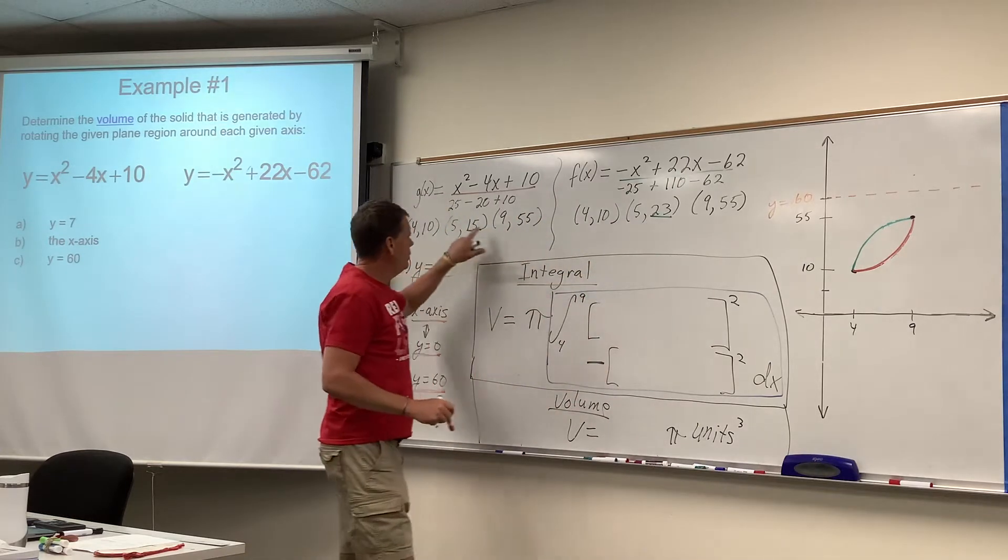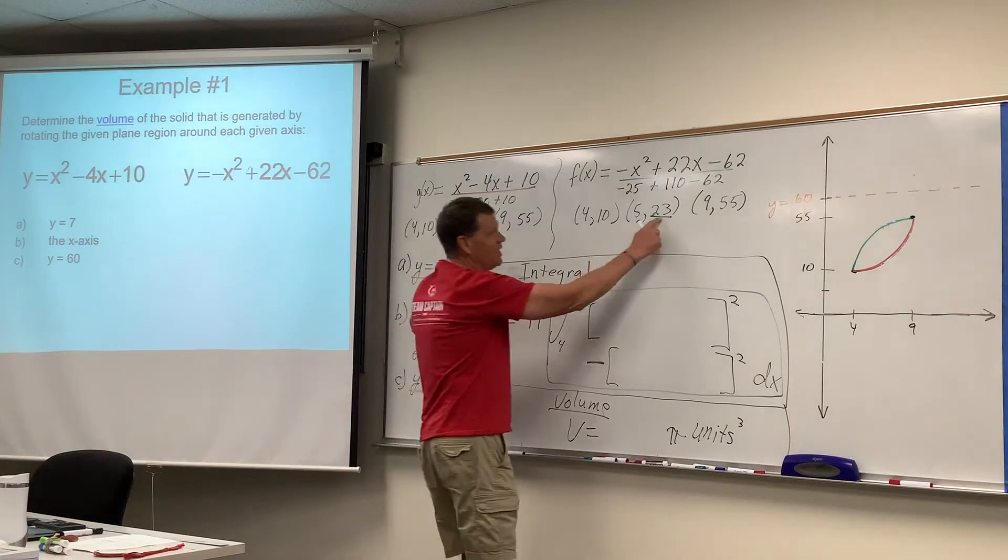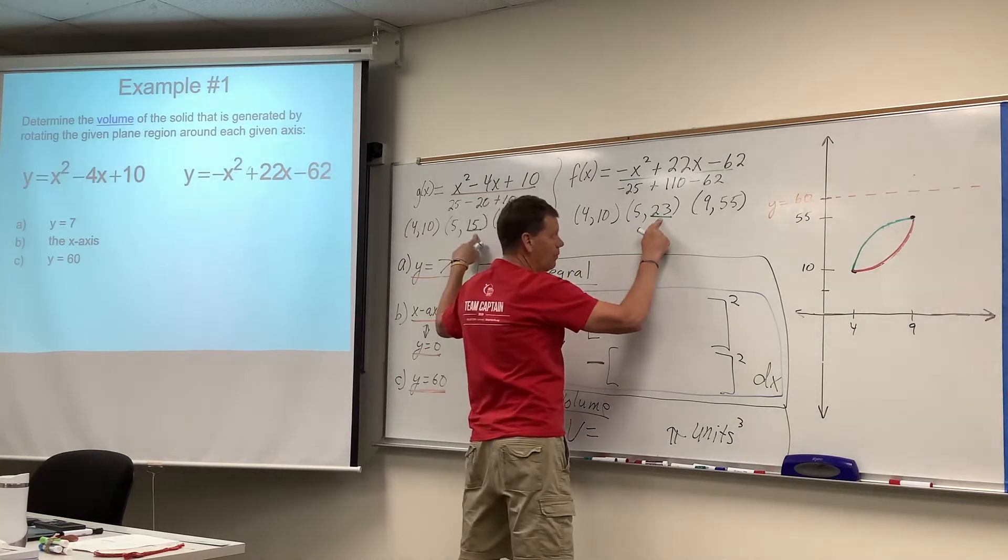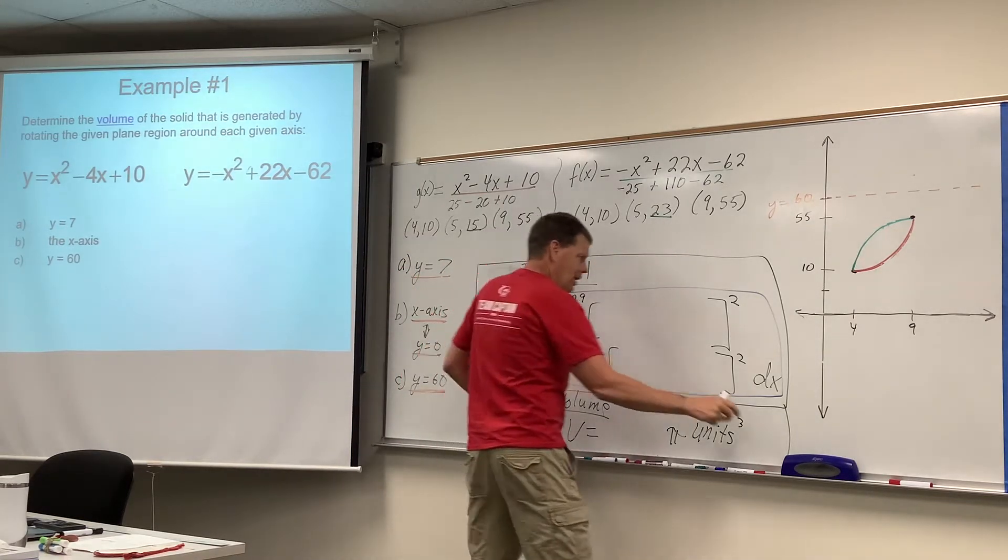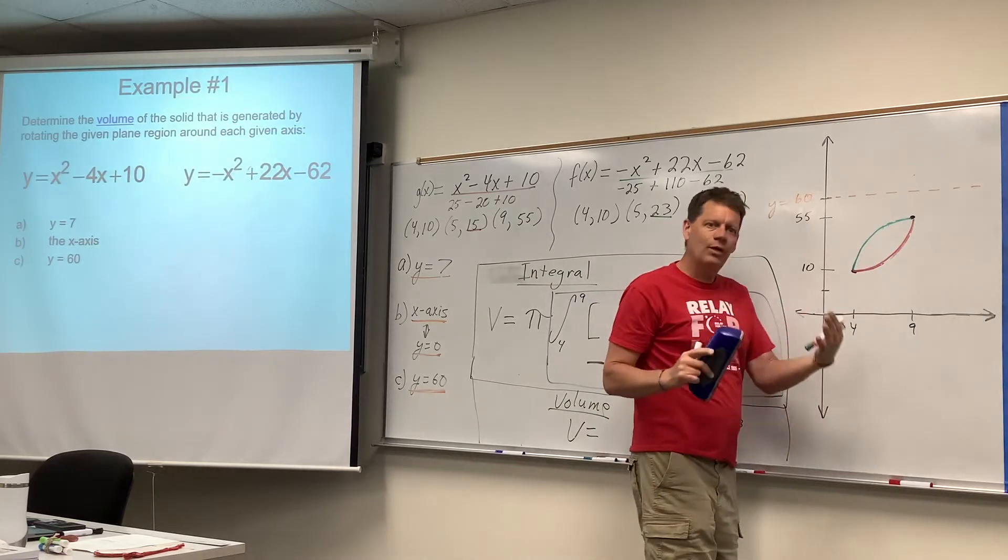When we did that test point in the middle, when we tested five, we're now comparing these values to 60. And you hopefully would agree with me that basically the red and green outside and inside have switched places.